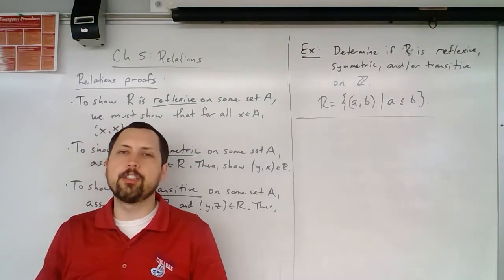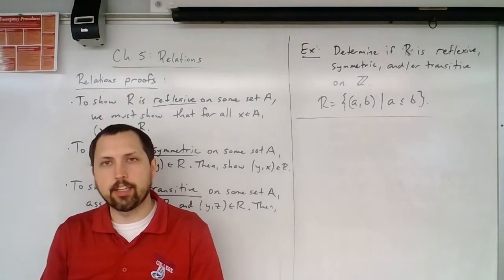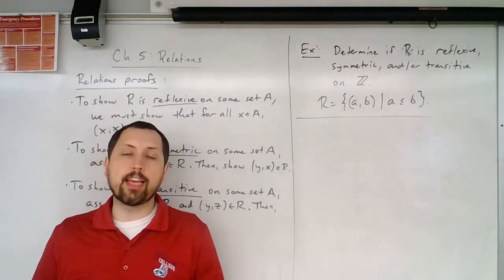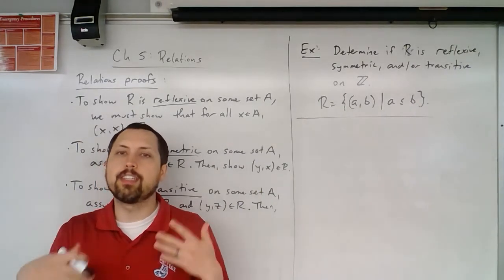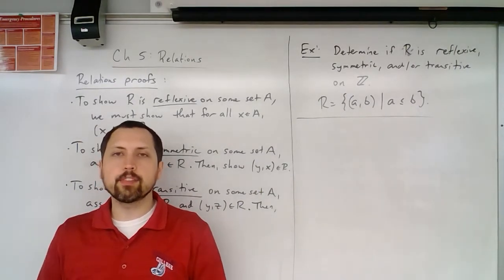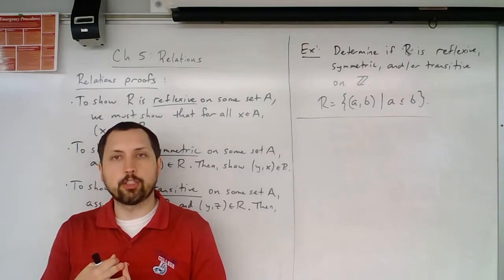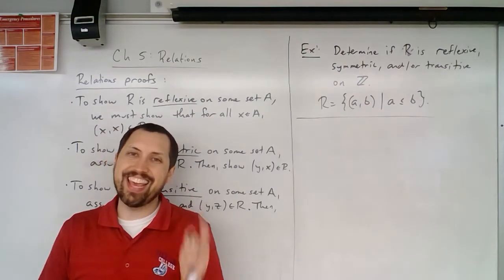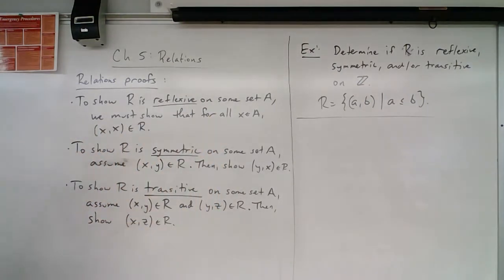Now that we've seen the definitions of reflexive, symmetric, and transitive, we want to figure out how to prove things. The examples from the last video were just to build intuition and familiarity with these three properties of relations. We'd like to do formal proofs to determine if something is or isn't reflexive, symmetric, or transitive. So let's take a look at some proofs.